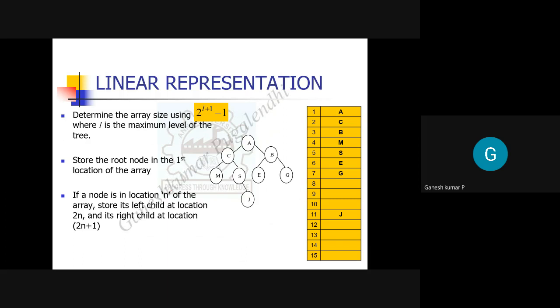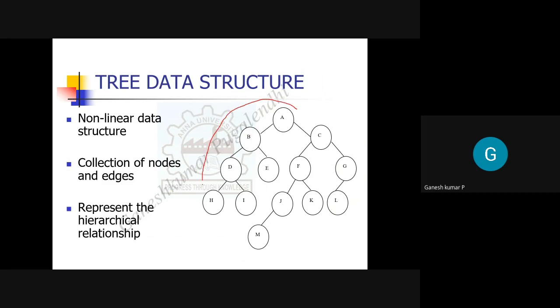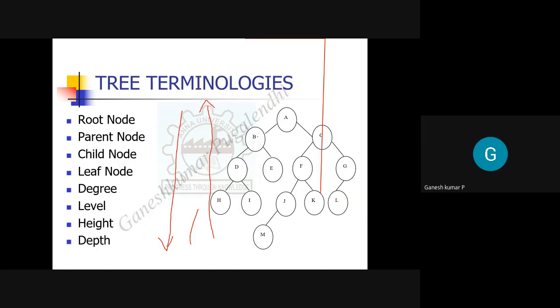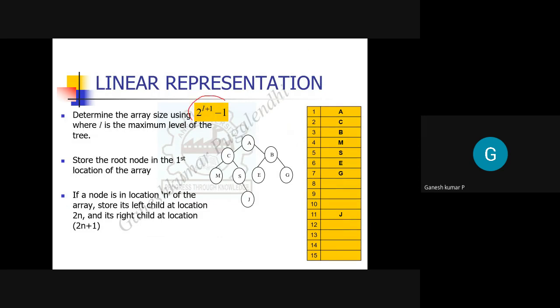The next important topic is representation — how to represent a tree. The logical diagram is for understanding purposes, but you cannot store data that way in computer memory. In the place of nodes like A, B, C, you can store names, designations, salaries, or any data. There are two main representations: linear (array) representation and linked (pointer) representation.